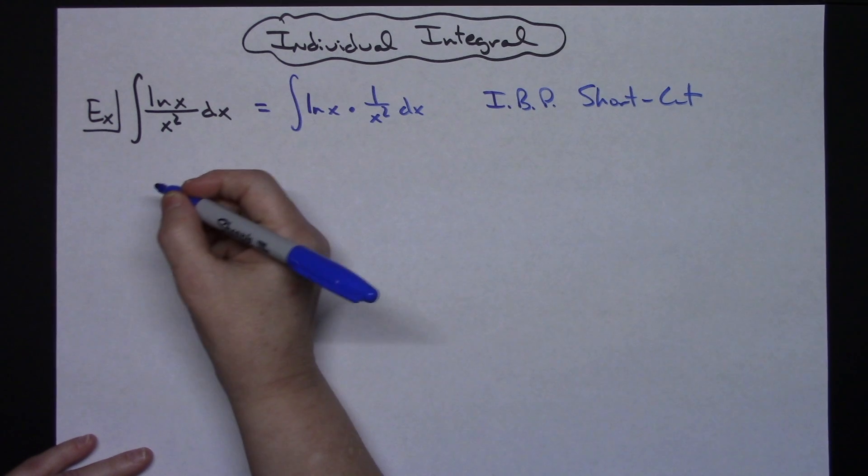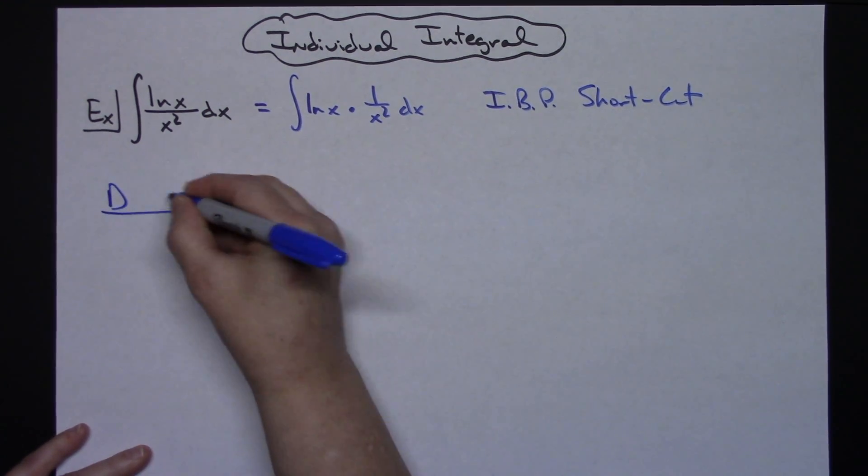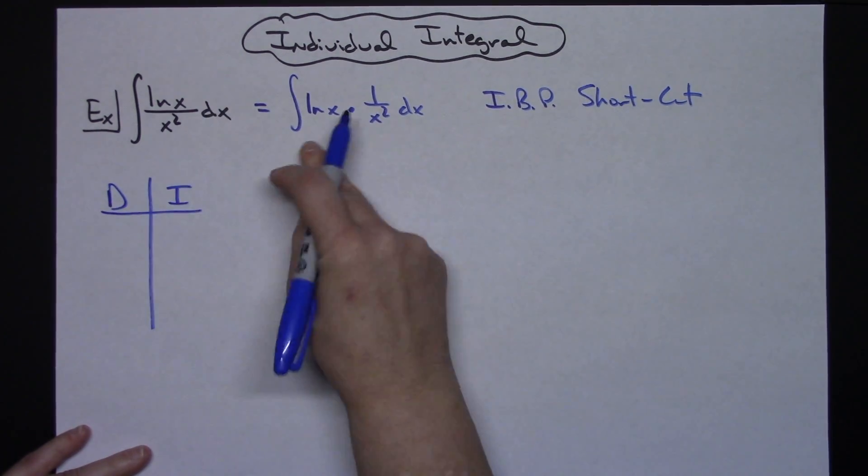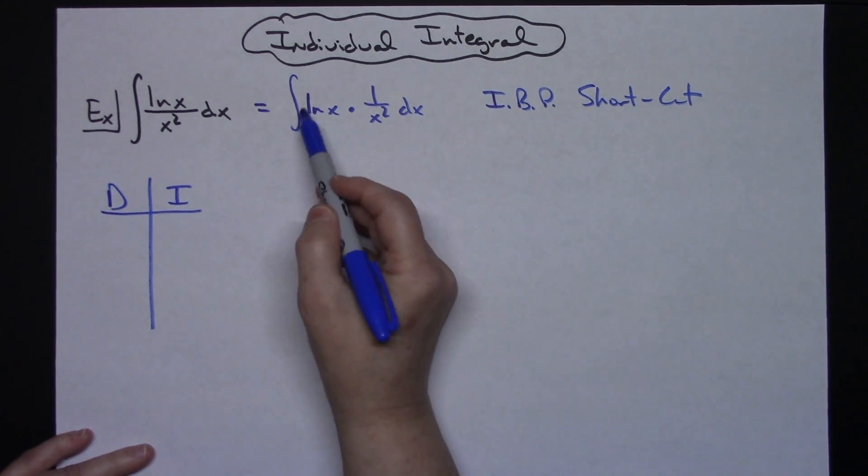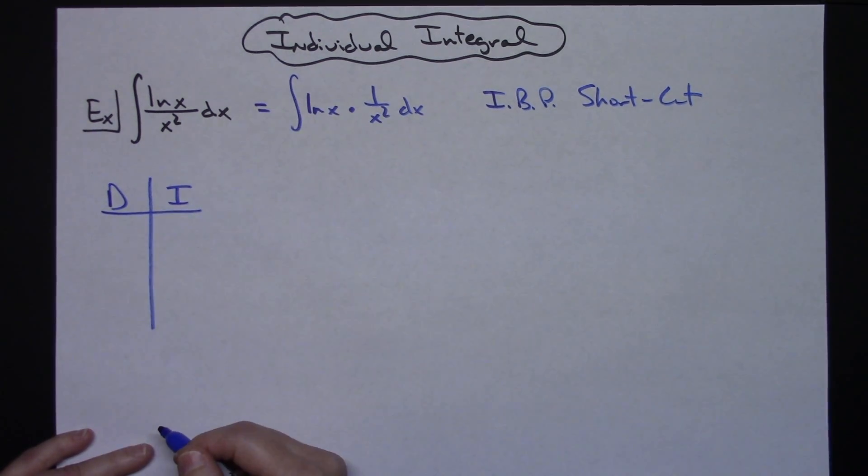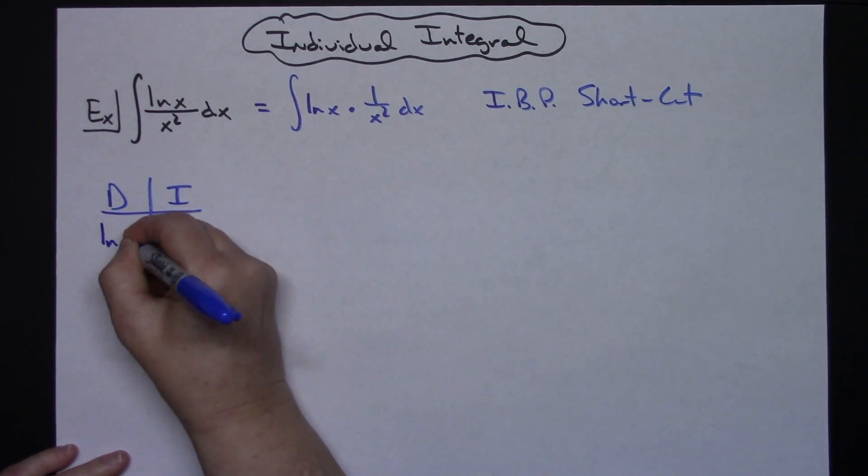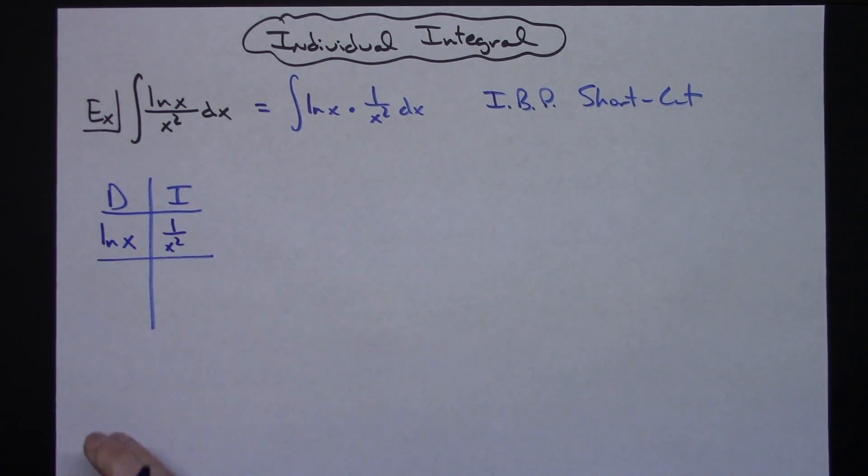So basically that shortcut method involves coming up with a derivative column and an integral column. You've got to pick one of these to be the derivative, one of them to be the integral. Now obviously we cannot integrate the natural log of x without integration by parts, so we do not want to select that in our integral part. So we're going to put the natural log of x in our derivative column; that would leave the one over x squared in the integral column.